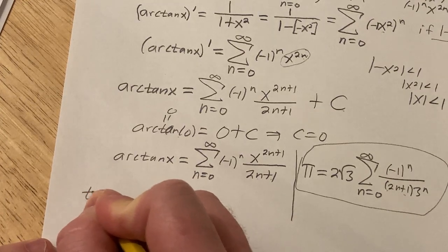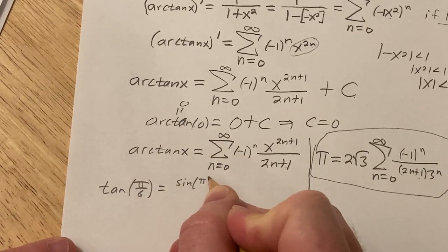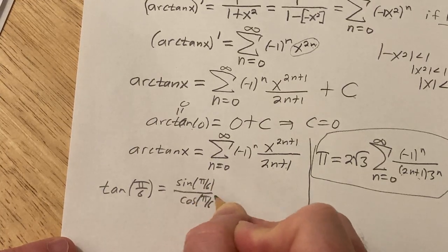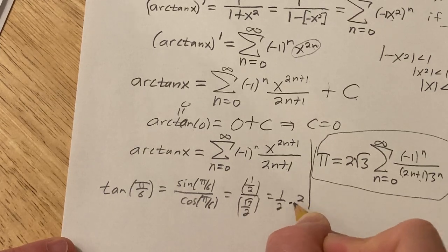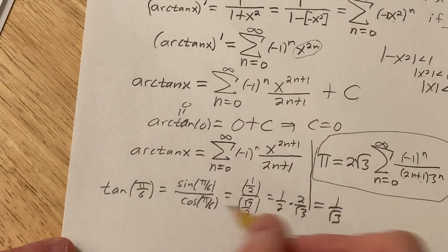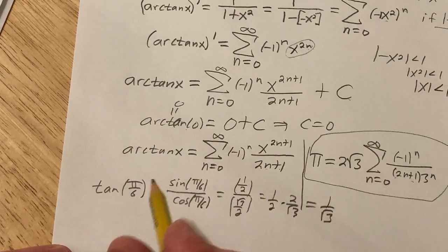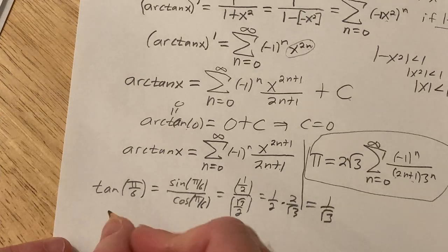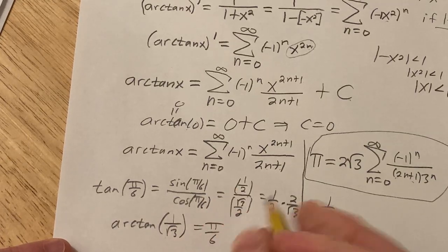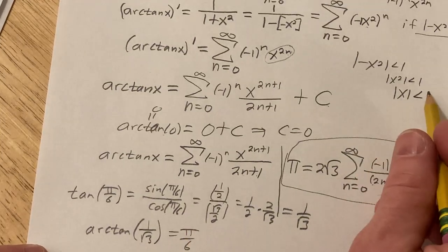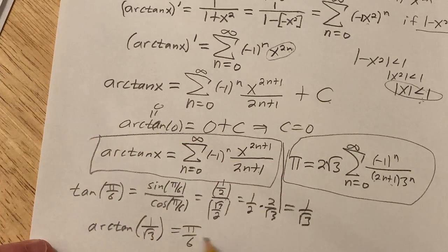The tangent of pi over 6 — that's sine over cosine — is sine of pi over 6 over cosine of pi over 6, which is 1/2 over square root of 3 over 2, which equals 1/2 times 2 over square root of 3, so that's 1 over square root of 3. You don't have to do all that if you have it memorized, but I wanted to show you how to come up with it. So the tangent of pi over 6 is 1 over root 3, which means that the arctangent of 1 over root 3 equals pi over 6. Note that 1 over root 3 is valid for our formula since it's less than 1.